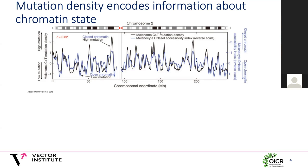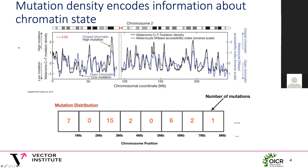Since most mutations are passenger mutations that are passed on over multiple cell divisions, the regional mutation density of a metastasis will actually tell us something about the chromatin state of a primary tumor. We can represent this feature in a very simple way by taking all the autosomes, joining them head to tail, and splitting them into one megabase bins. In each bin, we count the number of somatic single nucleotide variants, and all other information about these mutations can be discarded.